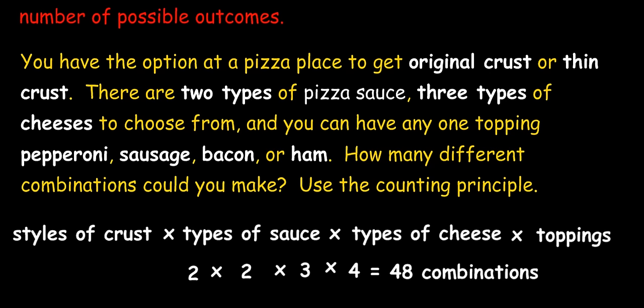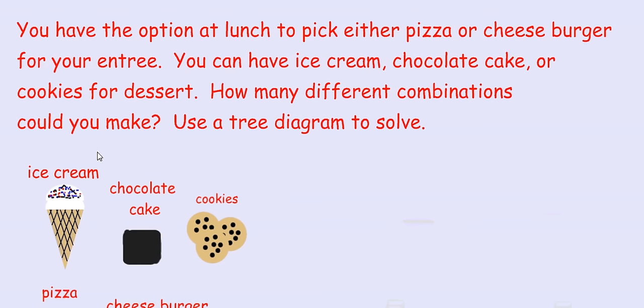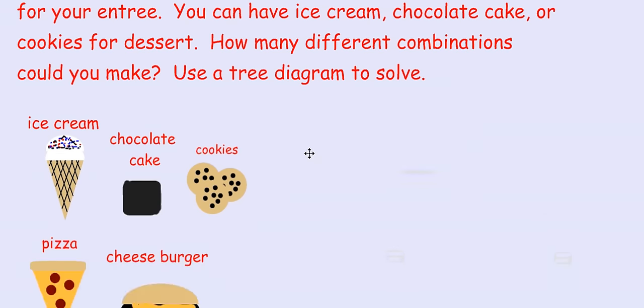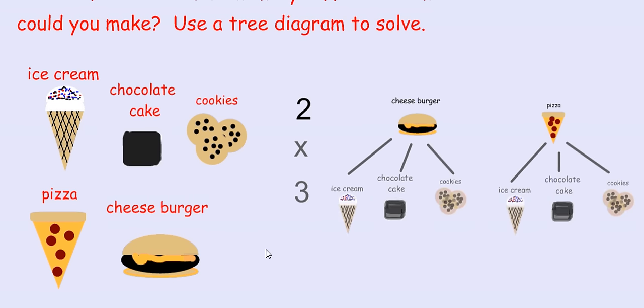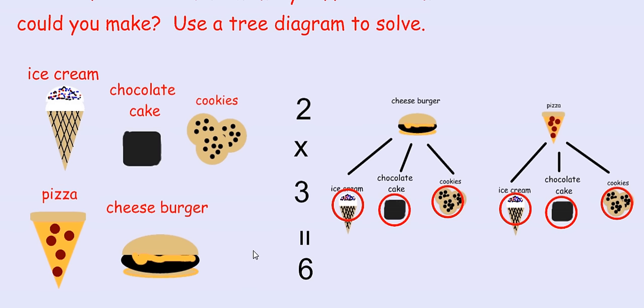Now, that's saying that you can only choose one of each. Again, we're trying to simplify the process. Let's see if we can use the counting principle to solve the problem that we did previously. If we had two entrees and multiplied by three desserts, choices of dessert, then we would get a total of six possible ways to put together a plate with one entree and one dessert.